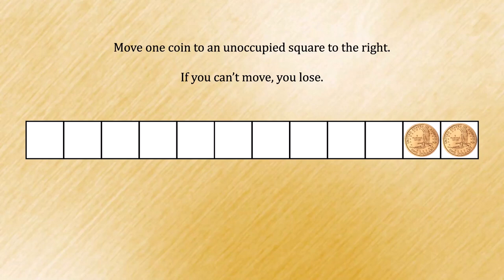And now on your turn, you can't move, because you can't place a coin on an unoccupied square to the right. Thus, I win and you lose.